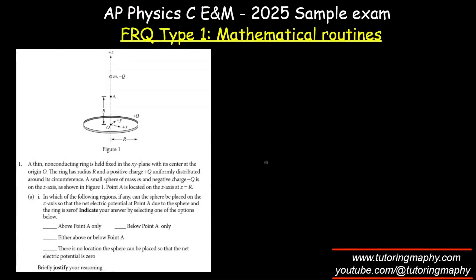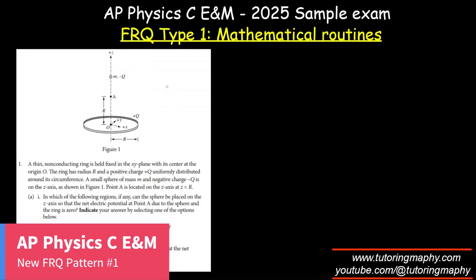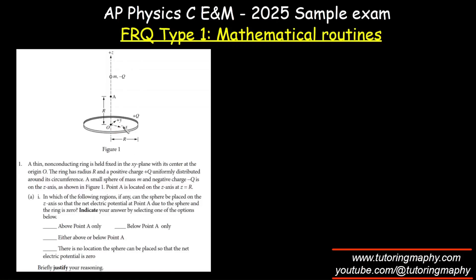This is a new FRQ type — Type 1 Mathematical Routines for EP6, E, and M. There's a thin non-conducting ring held fixed in the X-Y plane with the center at the origin. The ring has a radius R and a charge of Q, and there's a point A at a distance R from the center. There's also a small mass M, considered a small sphere, having a charge of negative Q. They're asking where the net electric potential at A is zero.